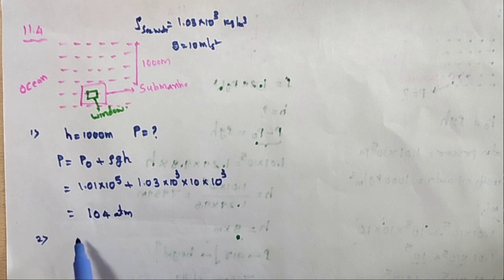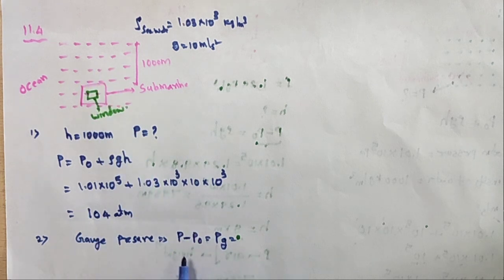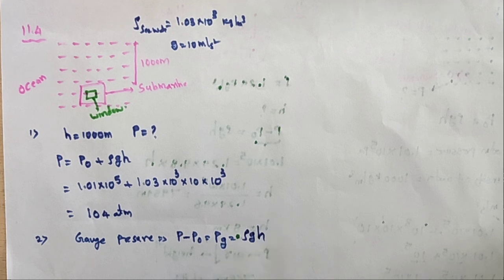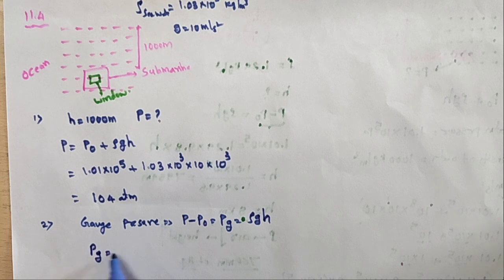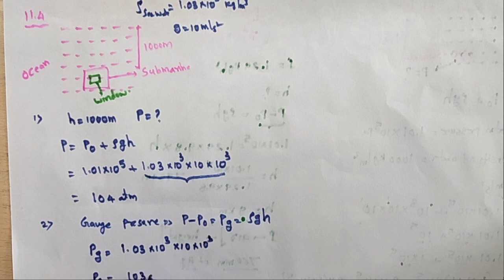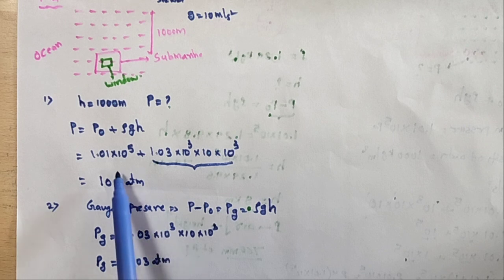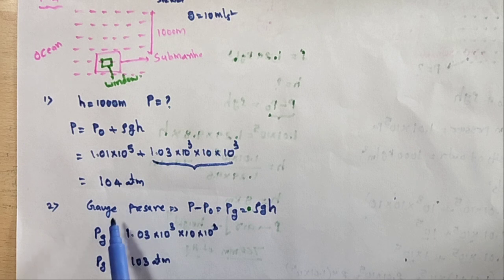Second: gauge pressure. PG = P - P₀ = ρgH. Taking ρ = 1.03 × 10³, g = 10, H = 10³: PG = 1.03 × 10³ × 10 × 10³. This gives approximately 1.03 × 10⁵ atmospheres — about 103 atmospheres. So the absolute pressure is 104 (= 103 + 1 atmosphere), and the gauge pressure is 103 atmospheres.